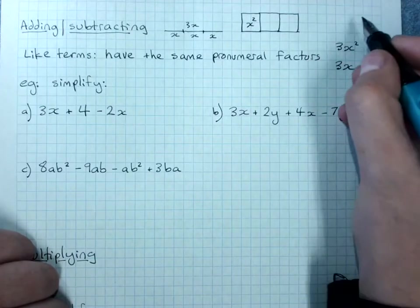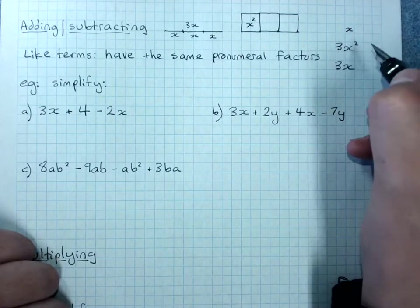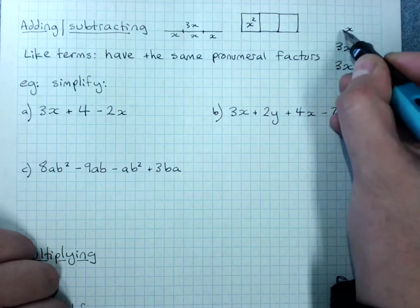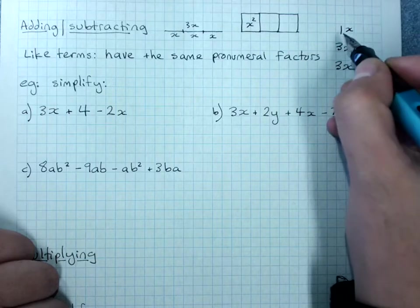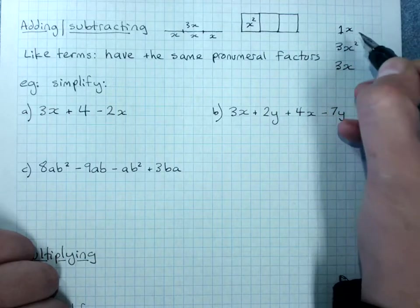Remember of course that if there's no number in front of the pronumeral then the factor or the coefficient that is numerical is 1. So x is the same as 1x.